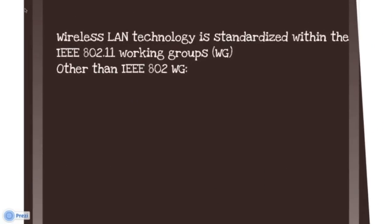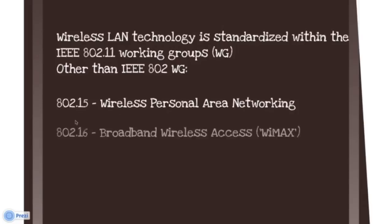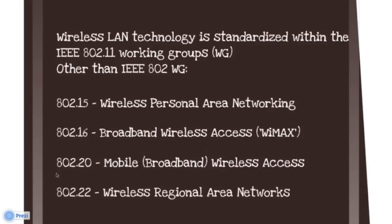These wireless standards are as follows: Wireless LAN technology is standardized within the IEEE 802.11 working group. 802.15 is the wireless personal area network, which deals with Bluetooth and ZigBee. 802.16 is broadband wireless access, commonly known as WiMAX, which was designed for long range networks. 802.20 is mobile wireless access. 802.22 is wireless regional area networks.